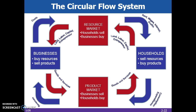Households are the owners of the resources, selling those resources in the resource market, and income flows into the households. Households are also the ones who buy goods and services in the products market. The prices paid in the products market are determined by supply and demand. Businesses buy the resources, providing income to the households.